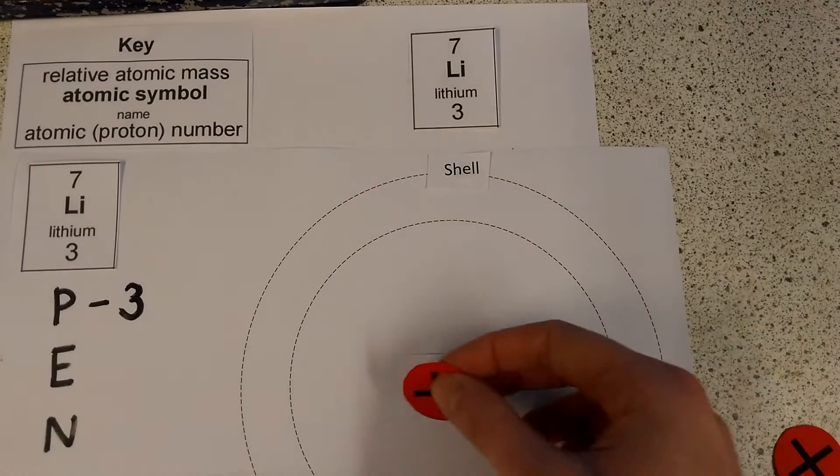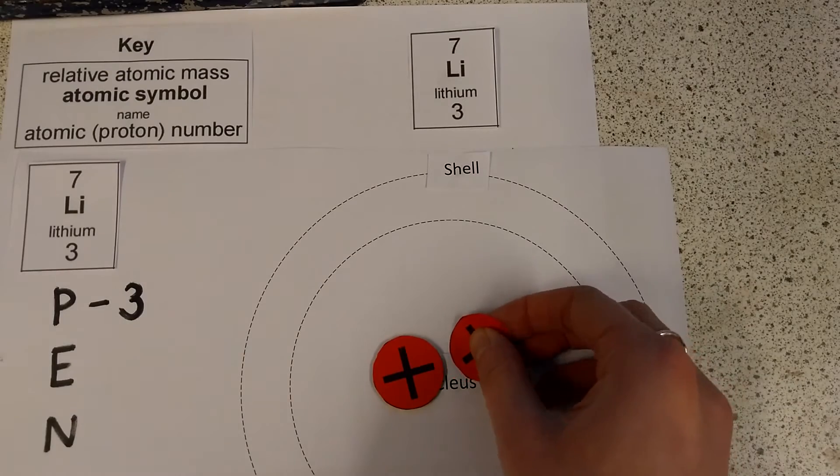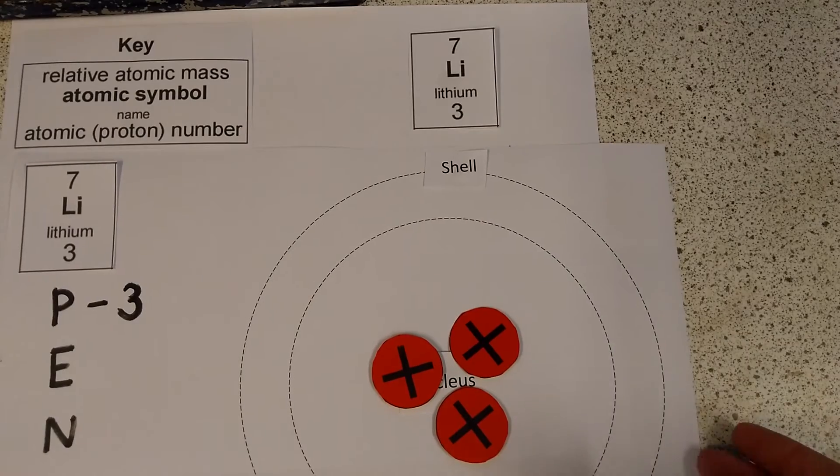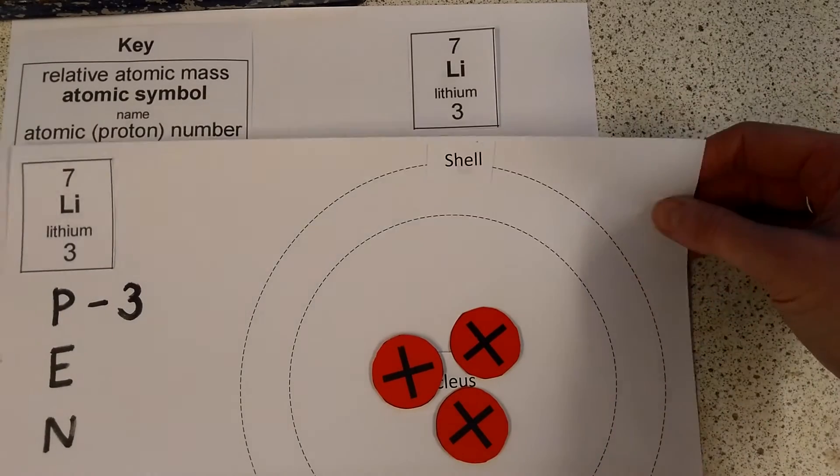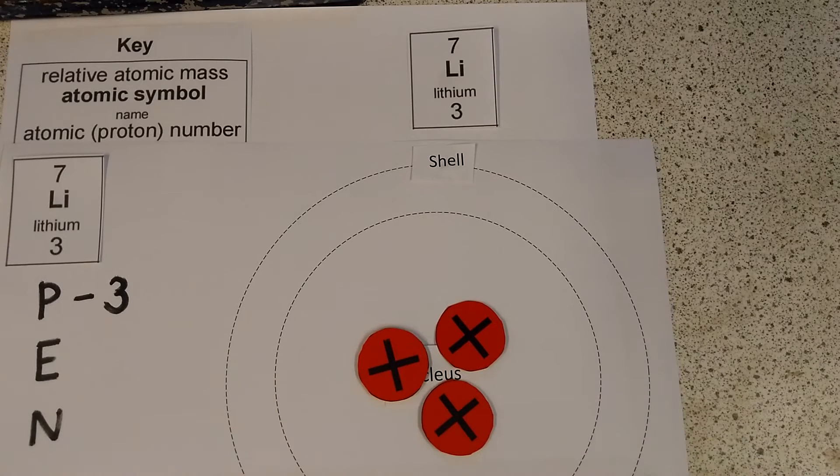So I'm going to take those three protons, and I'm going to put them right here in this nucleus. Now in reality, the nucleus is actually pretty small, but we're doing it big here, just to make it a little bit easier for us to see. So right in the middle of that nucleus, we've got these three positive protons.